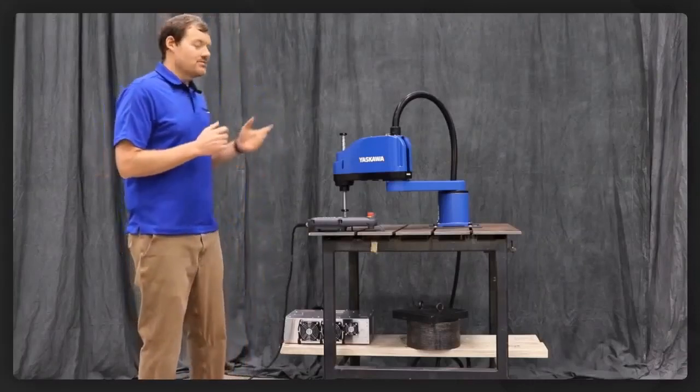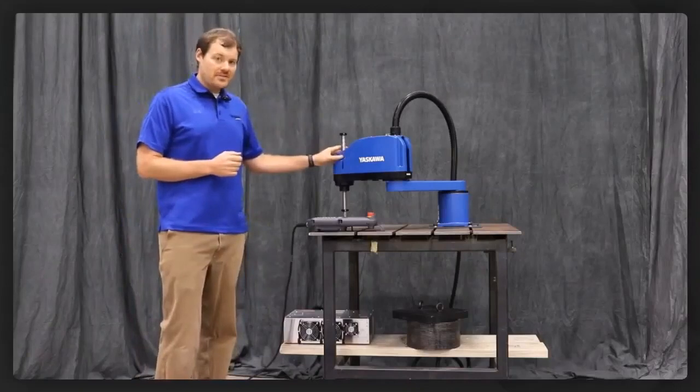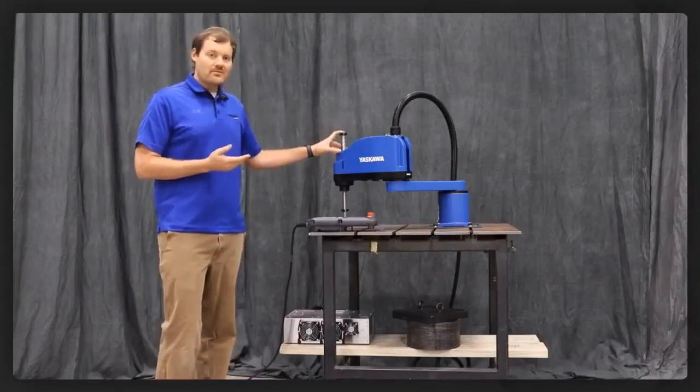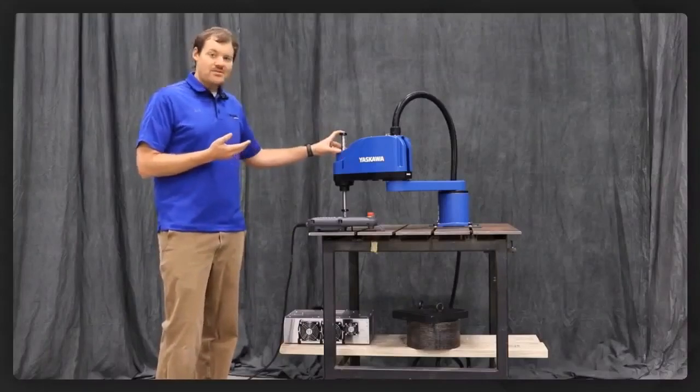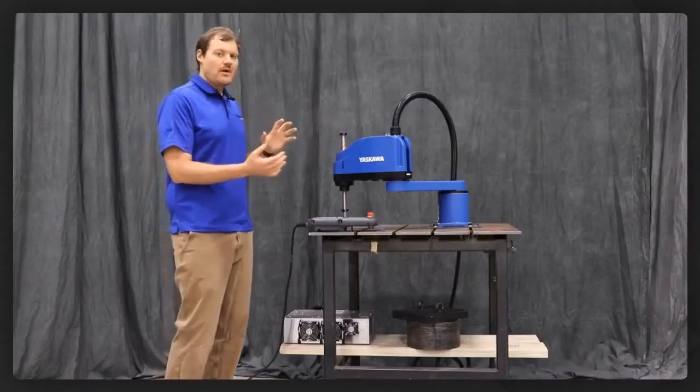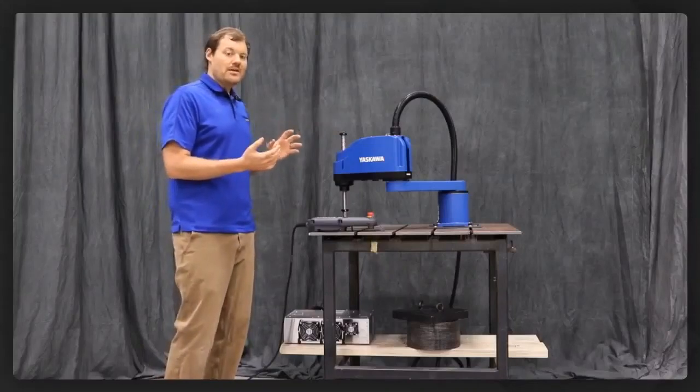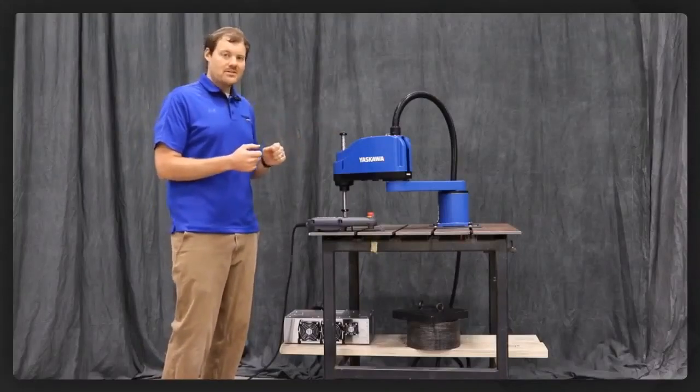So this is the Yaskawa SG-650 SCARE robot. And it's a very fast robot, one of the fastest in its class. We also have an SG-400 robot, which is a little bit smaller. That's a 400mm reach robot, equally as quick and also one of the fastest in its class.